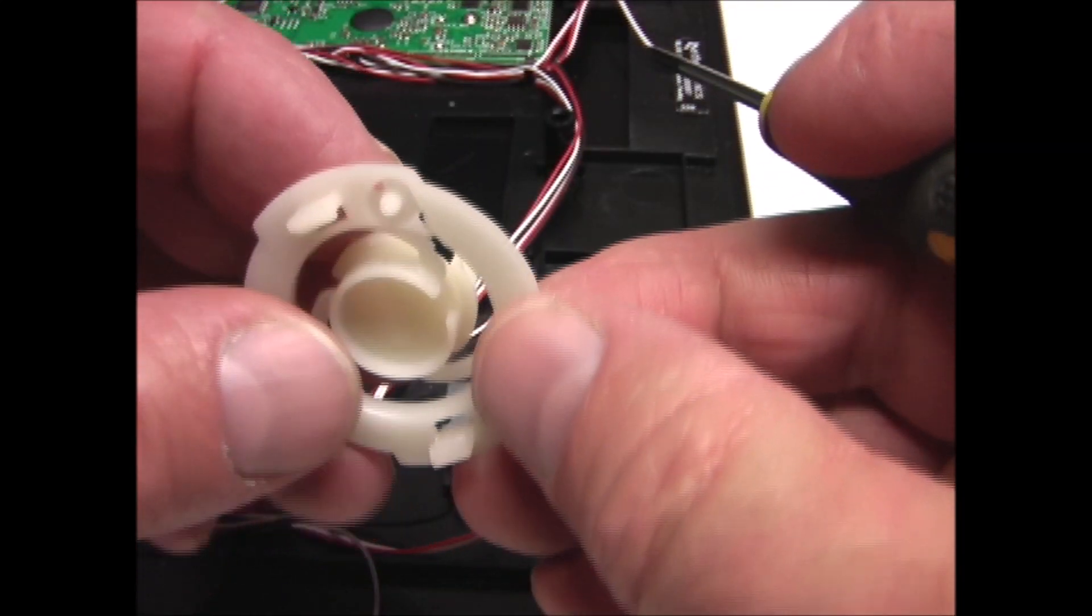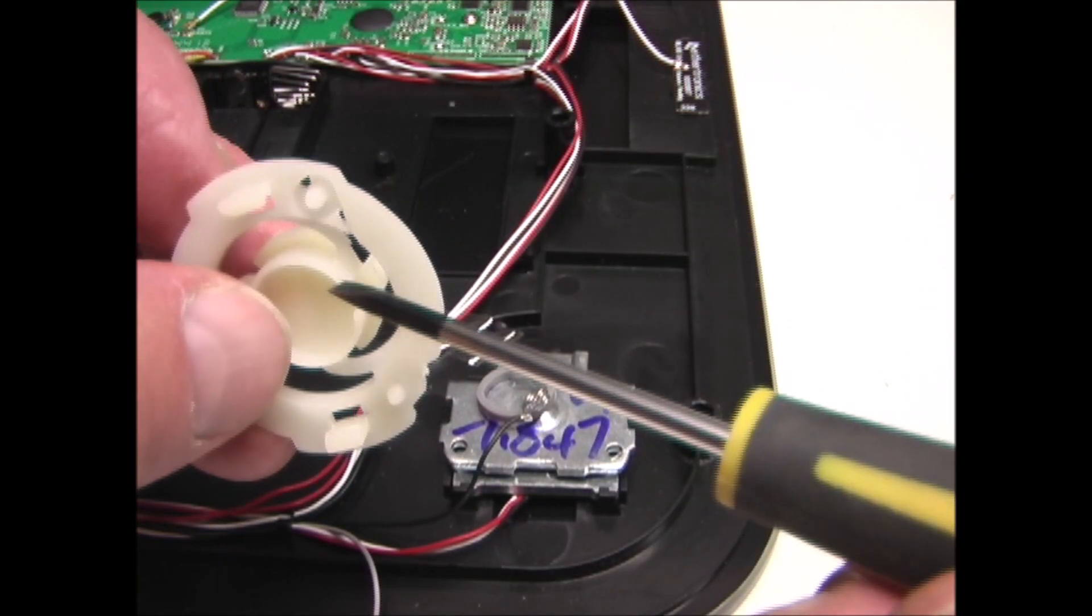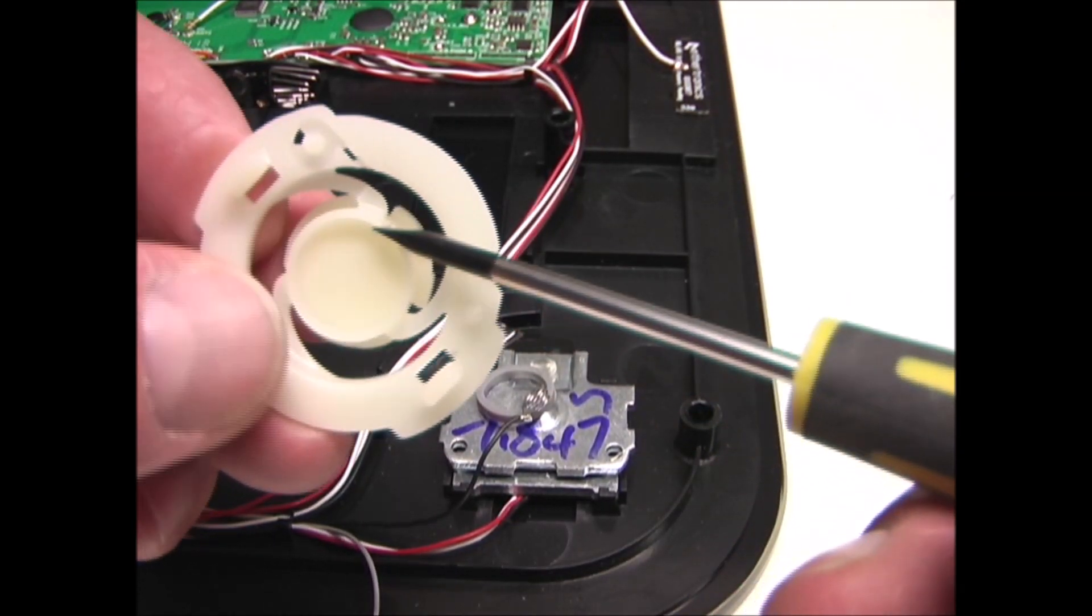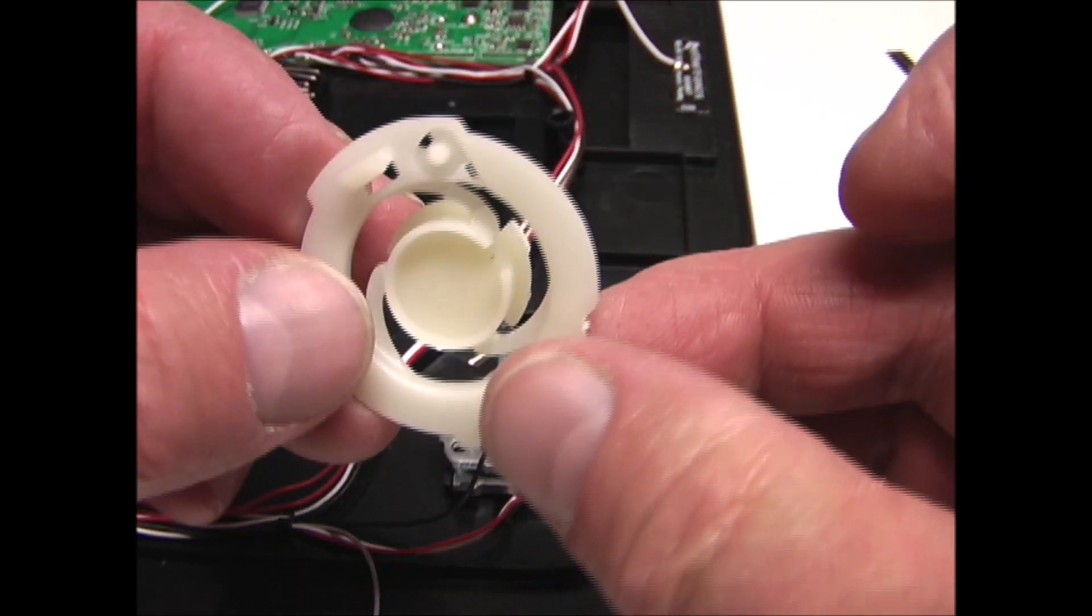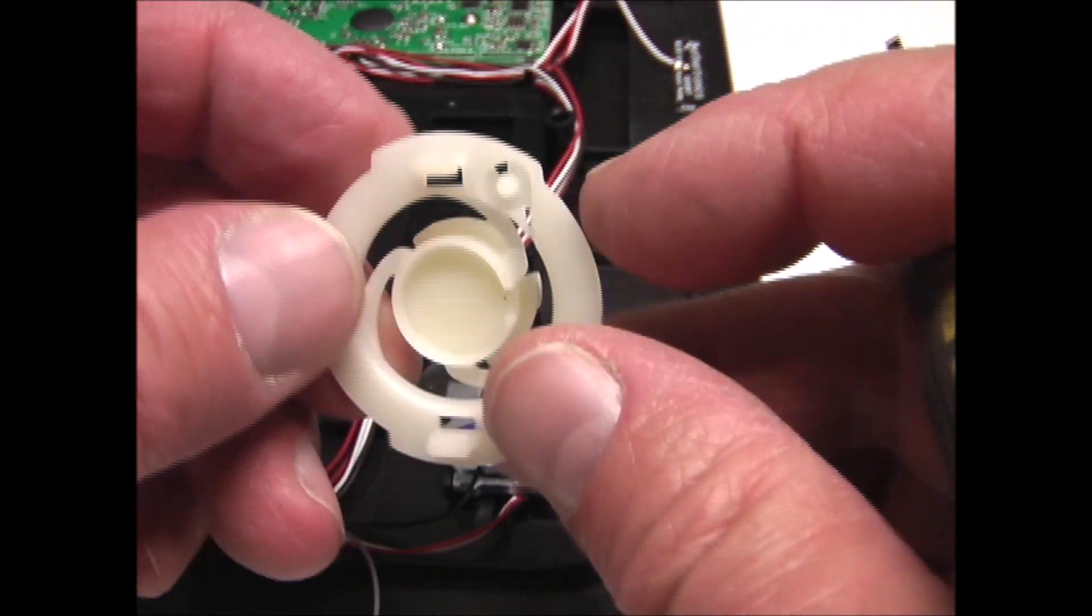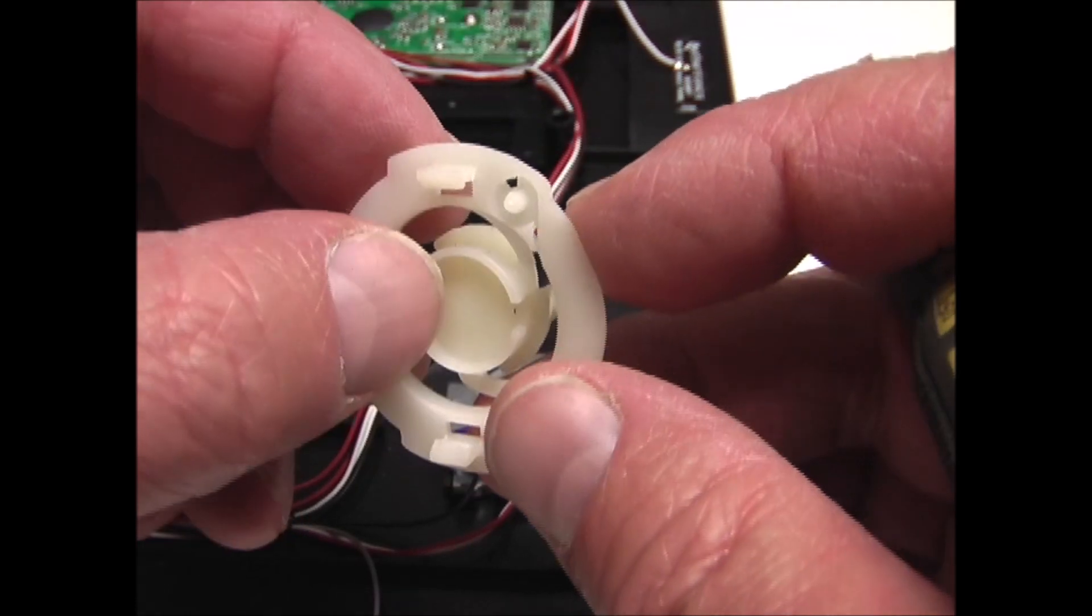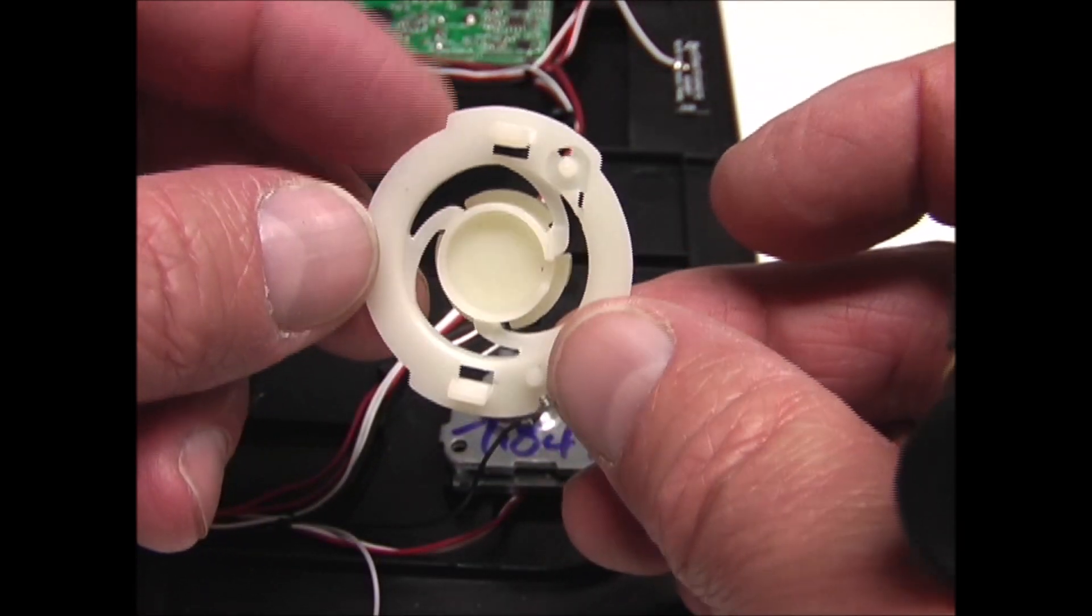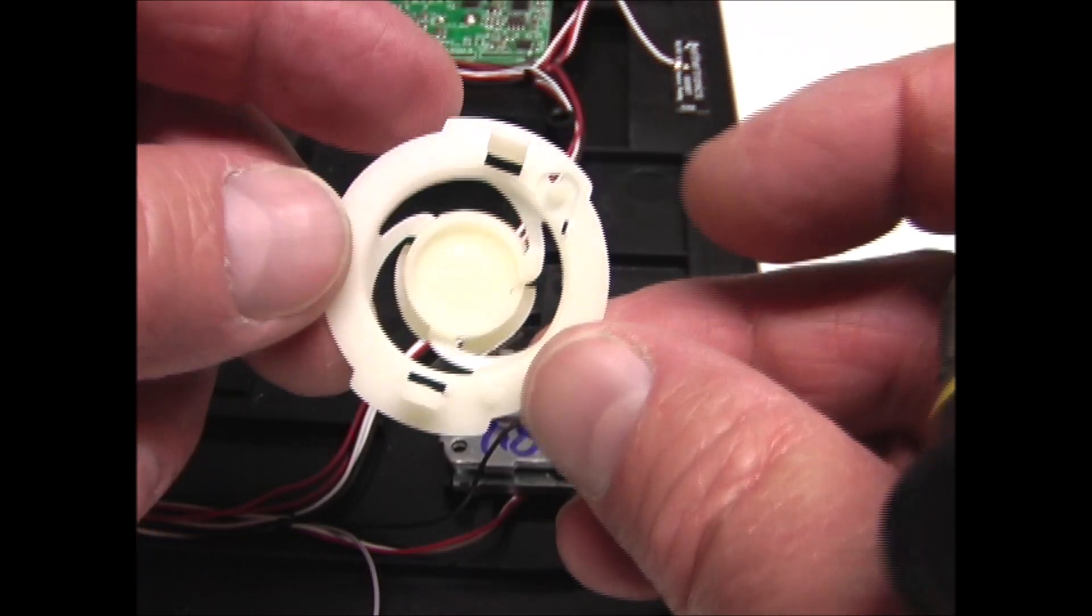So there's three different ways you could fix this. And one you could try to super glue where this is broken. Or you could buy a used scale for parts and take them out of there. And a third option would be to 3D print one. And I think I'm going to go that route.